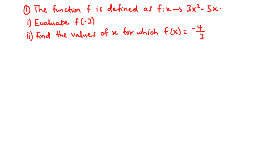As we prepare for the upcoming NOVDECK core mathematics paper, we are going to solve some questions on relations, mapping and functions. Question 1 is NOVDECK 2008 question 12e. The function f is defined as f(x) maps to 3x squared minus 5x. Part i: evaluate f of negative 3. Part ii: find the values of x for which f(x) equals negative 4 over 3.